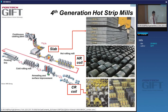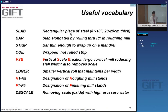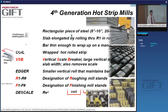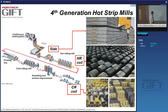After hot rolling, products proceed to pickling, cold rolling, annealing, and possibly coating, producing cold-rolled flat products — discussed in a separate section. Useful vocabulary: a slab is a rectangular piece roughly 20-25 cm thick, more than a meter wide, and about 10 meters long. A bar is the name given to the slab after passing through the rougher, typically reduced from 25 cm to about 2.5 cm — translating to a length increase from 10 meters to about 100 meters. A strip is the thin product after the finisher, thin enough to be coiled.